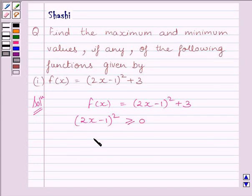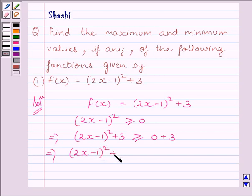Now, adding 3 on both sides, we get (2x - 1)² + 3 ≥ 0 + 3. This further implies (2x - 1)² + 3 ≥ 3.